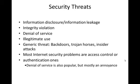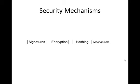Security mechanisms provide the security requirements we just described. For example, by using encryption you provide confidentiality, because the data is encrypted and no one can read or understand it. The one who receives the data decrypts it and reads it. But there is still a problem with integrity.